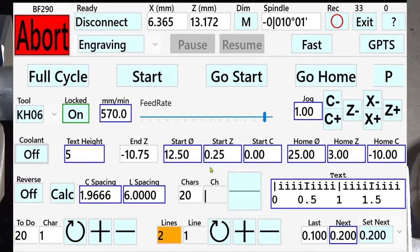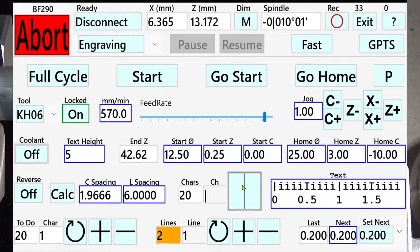We can engrave text in two orientations: from left to right or from top to bottom. Top to bottom is the way to use for a dial.